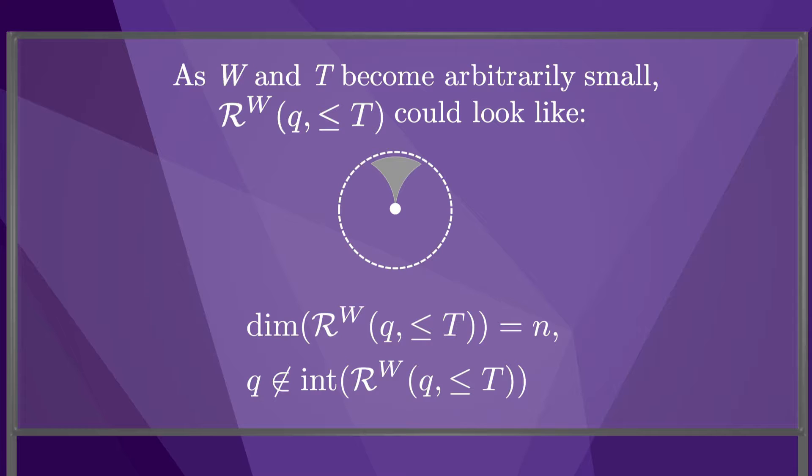Another alternative is that the locally reachable set looks something like this. The robot can locally reach a full-dimensional subset of its configuration space, but the initial configuration q is on the boundary of the reachable set.